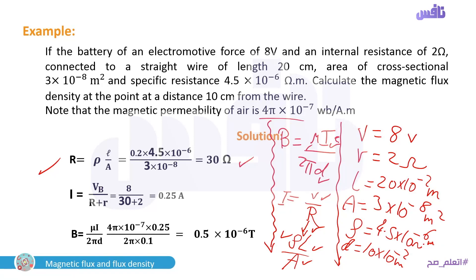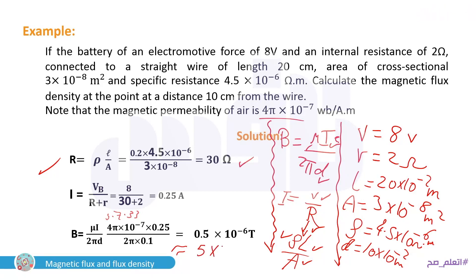B = (2 × 10⁻⁷ × 0.25) / (2π × 0.1). Using the calculator, the final value is 5 × 10⁻⁷ Tesla.